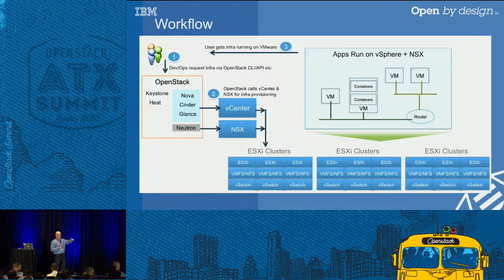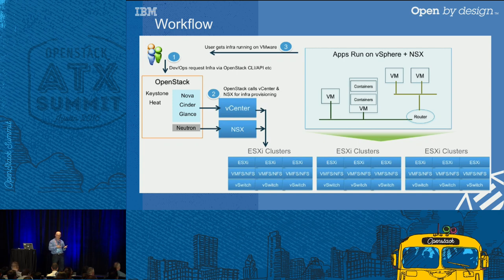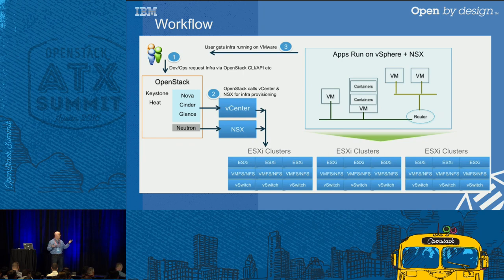This is the workflow I was talking about. At point one, that's the DevOps request — in our case, Urban Code Deploy was the designer. You can do that in different ways; we did it with Urban Code Deploy and also using Heat directly. You provision and request, and the OpenStack cloud replies back with traditional tools: Keystone, Nova, Cinder, Glance, Neutron.